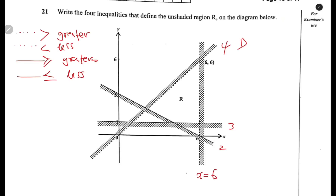To find the inequality for the line x equals 6, we look at the part which is not shaded. Going to the right, x increases, so that is the greater part of the line, and the left side is the less part. Since it's a dotted line, we use the less than symbol. So we are going to say x is less than 6. That is the first inequality.